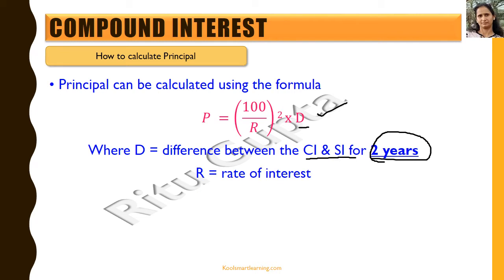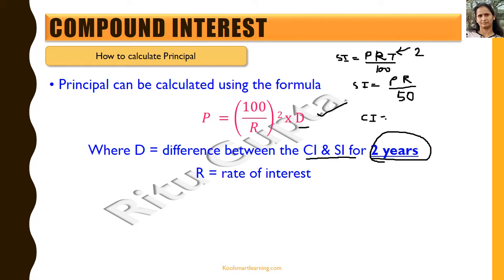Let's see how do we arrive at this formula. We know that the simple interest is given by the formula PRT by 100. So if we take t to be 2, we get simple interest to be equal to PR by 50.